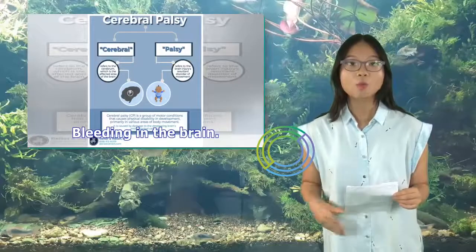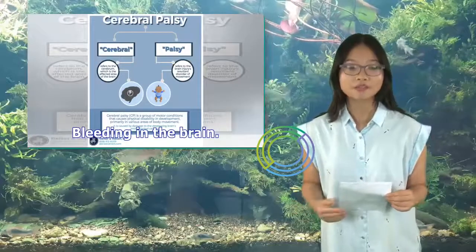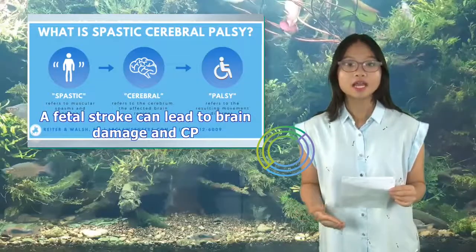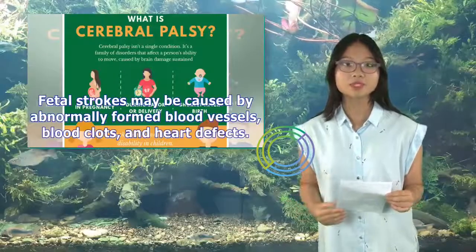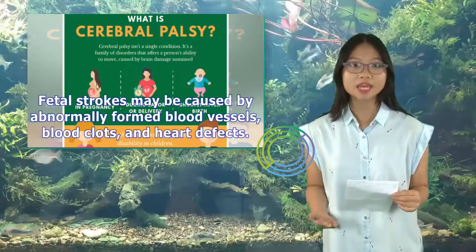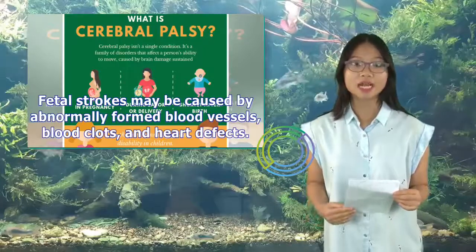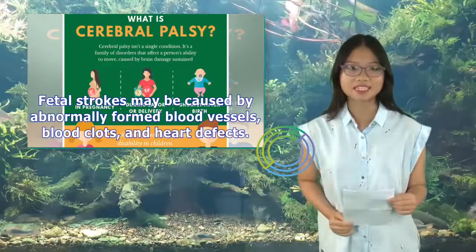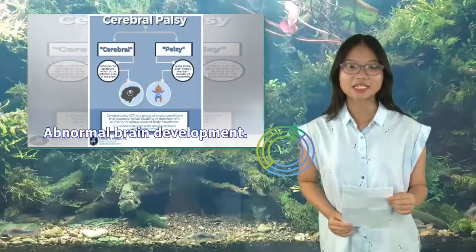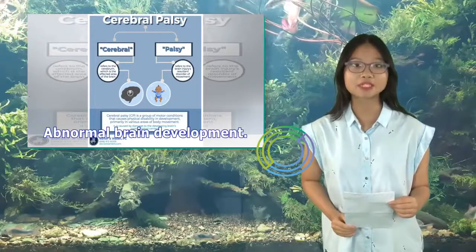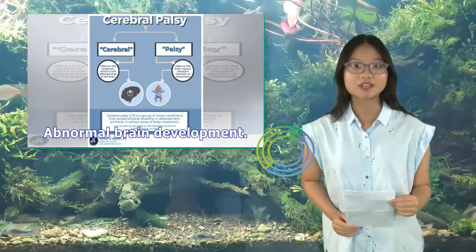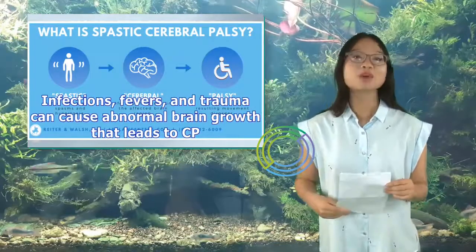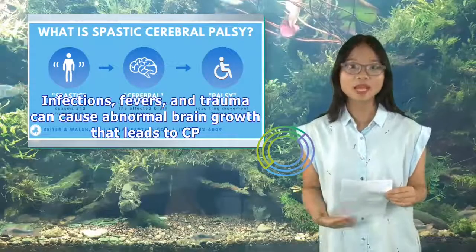Bleeding in the brain: a fetal stroke can lead to brain damage and CP. Fetal strokes may be caused by abnormally formed blood vessels, blood clots, and heart defects. Abnormal brain development: infections, fevers, and trauma can cause abnormal brain growth that leads to CP.